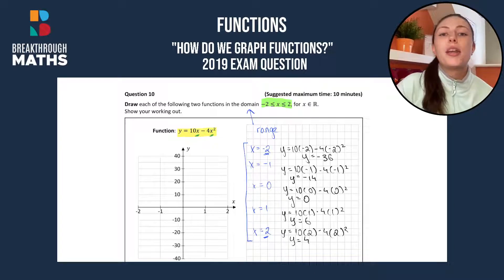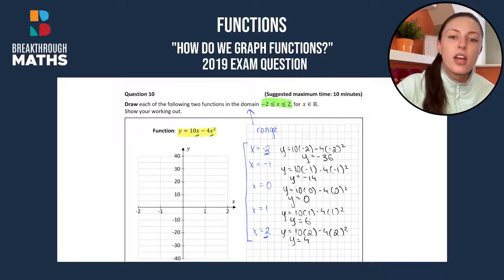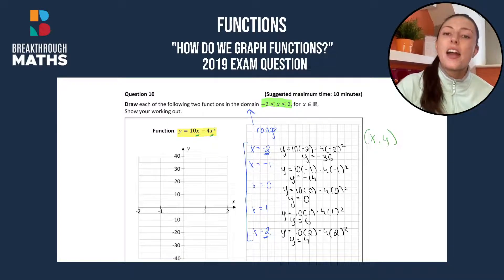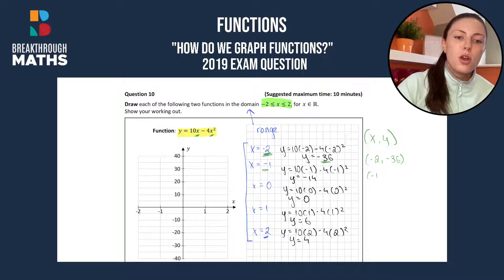Now we just have to write out their corresponding coordinates so that we can draw them on the graph. Coordinates, remember you have your x value first and your y value second. So our x value here was minus 2 and we got y is minus 36. Next, x was minus 1, y was minus 14. Then we had 0, 0, we had 1, 6 and we had 2, 4.